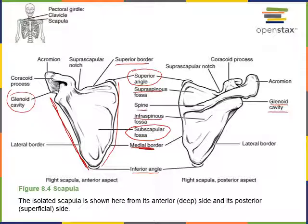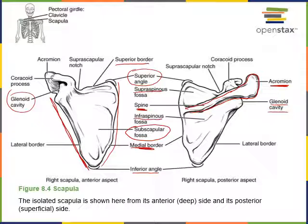The spine of the scapula is a ridge on the posterior of the body, extending across from the medial border outward laterally. The enlarged end of the scapular spine is called the acromion or the acromial process. This is a flat projection that articulates with the clavicle, forming the AC joint, the acromioclavicular joint.